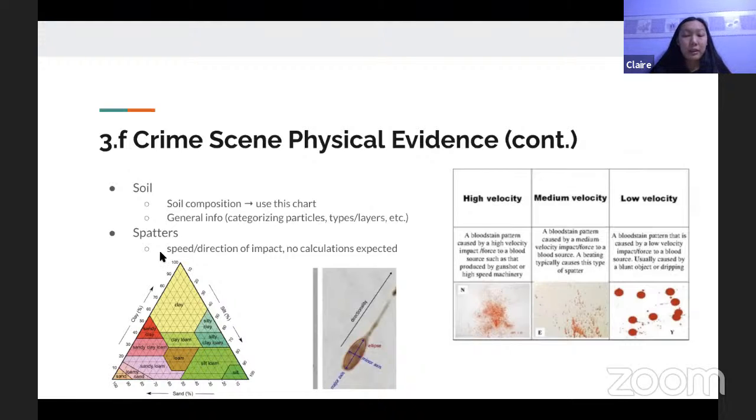And then the last part is spatters. So they'll be asking about blood spatters. So the speed and the direction of impact, but there will be no calculations expected. So some important stuff to know, for example, the direction of the spatter always follows the tail. So like in this example here, the tail is pointing northeast. So you can assume that it was traveling northeast when it hit the ground. And then you also want to be able to identify the velocity of a blood spatter based on an image. So here, for example, high velocity would come from a gunshot, and then medium velocity would come from a beating, and then low velocity would come from blunt objects or dripping. And you might also want to know exactly what speed would be for each one.